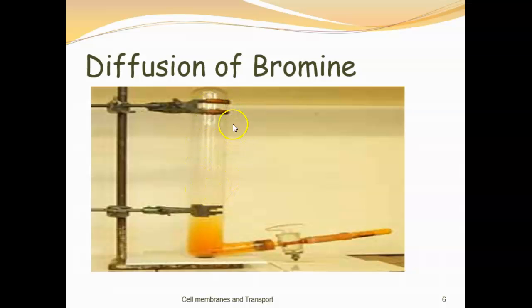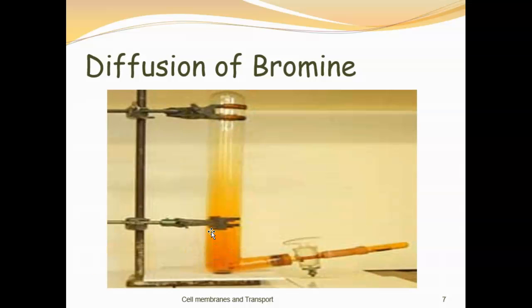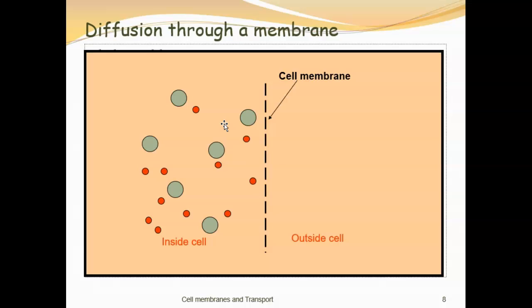This is an evacuated tube with liquid bromine, which is one of the few elements that is liquid at room temperature. You can see a high concentration right here. This is a vacuum, so there's no air molecules pushing or mixing it. It's just the energy of the molecules themselves that are moving, and over time they diffuse out into that space.